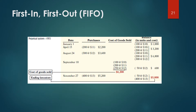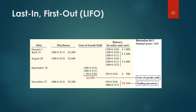Under perpetual FIFO, the company charges to cost of goods sold the cost of the earliest goods on hand prior to each sale. Therefore, the cost of goods sold on September 10 consists of units on hand January 1 and units purchased April 15 and August 24. Illustration 6A-2 shows the inventory under the FIFO perpetual system. Under LIFO with a perpetual system, the company charges to cost of goods sold the cost of the most recent purchase prior to sale. The cost of goods sold on September 10 consists of all units from the August 24 and April 15 purchases, plus 50 units from beginning inventory. Illustration 6A-3 shows the computation of ending inventory under the LIFO method.